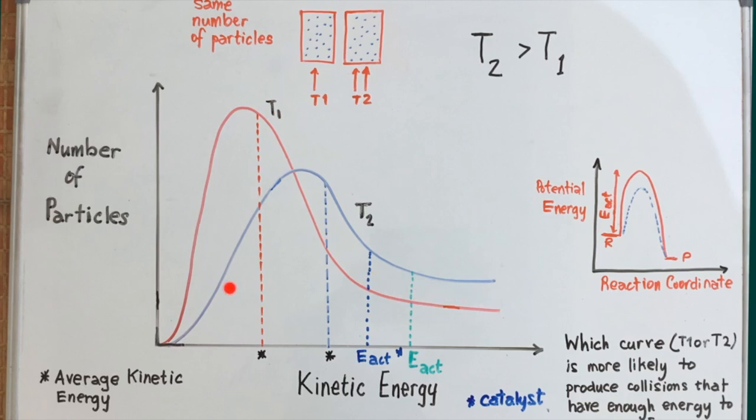And the area under the curve corresponds to all of the particles in the container. If the particles in the container are heated up at a higher temperature, then the number of particles remain the same. But at temperature T2, the distribution of energy among these particles changes. And here you can see now that the average kinetic energy of particles in T2 is this much, which is significantly higher than the average kinetic energy at temperature T1.